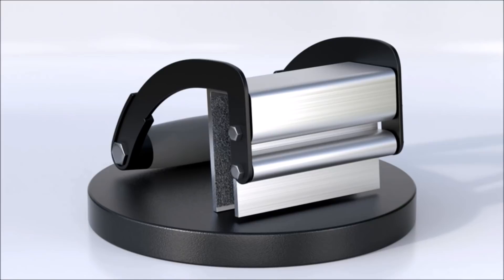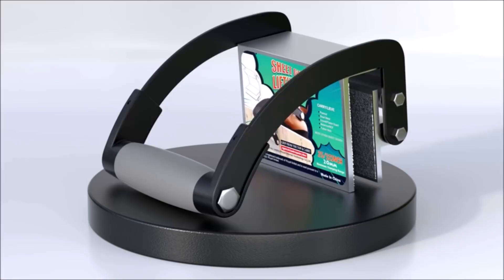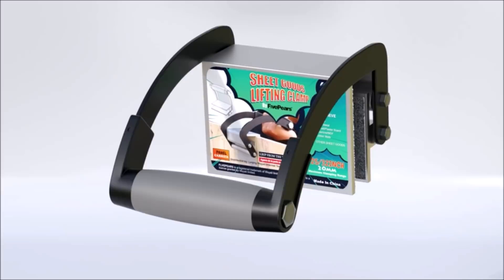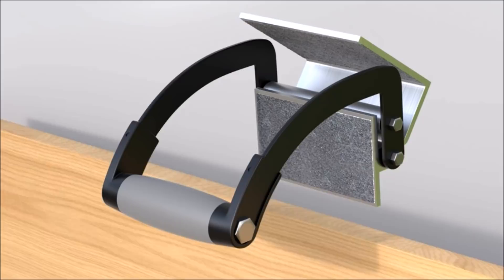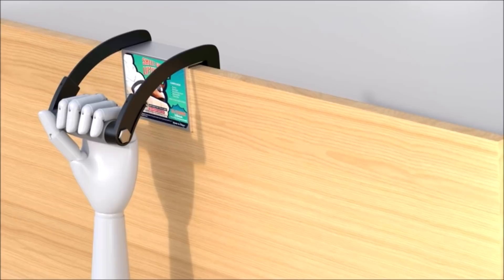This panel plywood lifter features a durable impact-resistant ABS handle that makes it easy for a single person to lift and carry full sheets of material with only one hand. A clamp can hold up to two sheets or panels at once, accommodating loads of up to 200 pounds. Get the job done quicker with the convenient sheet and panel mover.